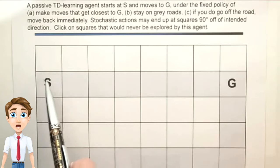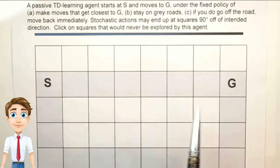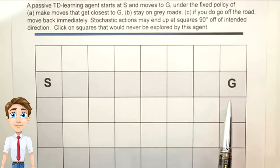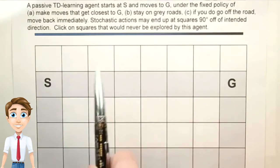But if he did, he would go back down onto the road. Likewise, might fall off onto any one of these squares. But if he did, he would also go back towards the road.